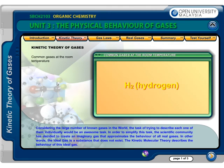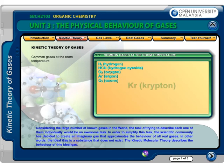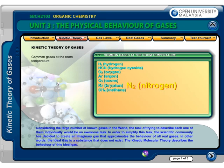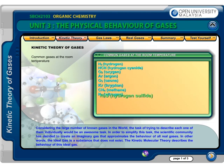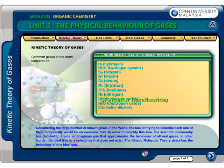Considering the large number of known gases in the world, the task of trying to describe each one of them individually would be an awesome task. In order to simplify this task, the scientific community has decided to create an imaginary gas that approximates the behavior of all real gases. In other words, the ideal gas is a substance that does not exist. The kinetic molecular theory describes the behavior of this ideal gas.